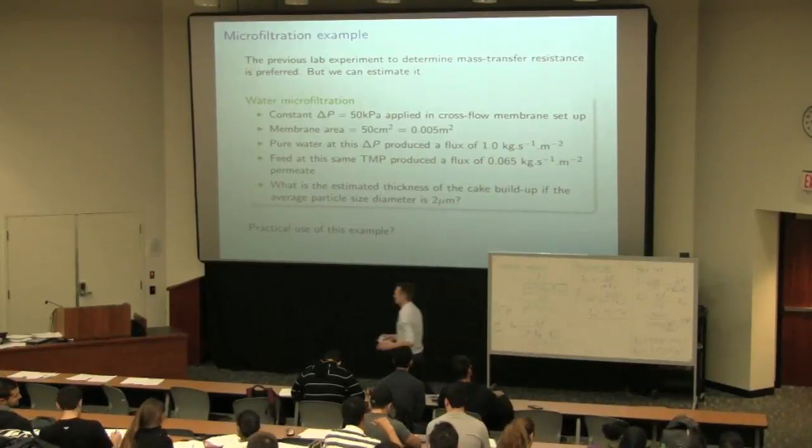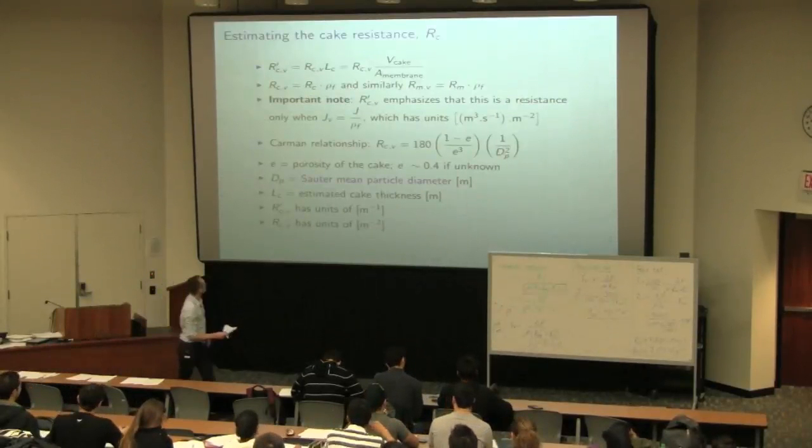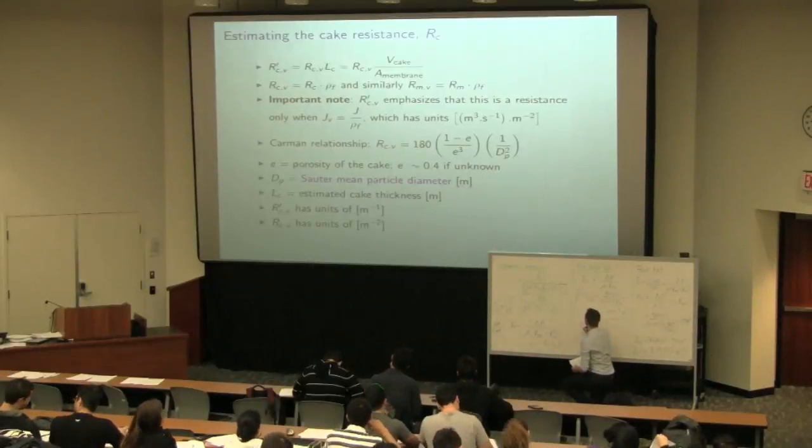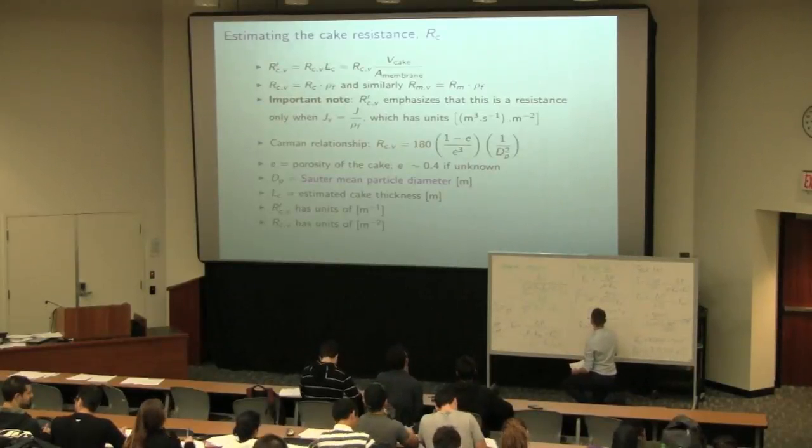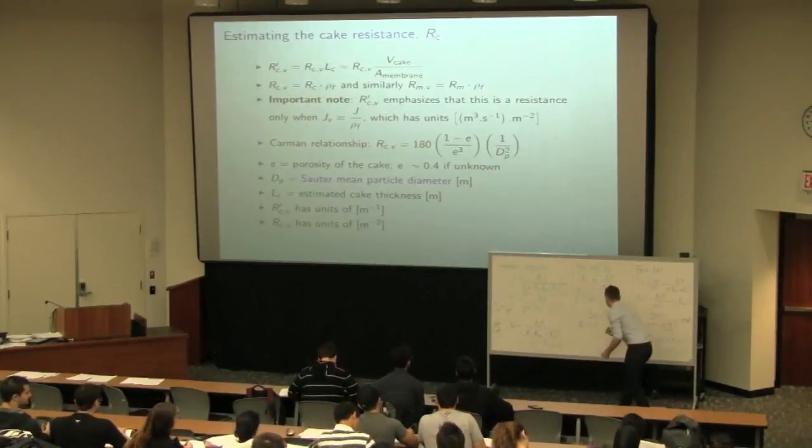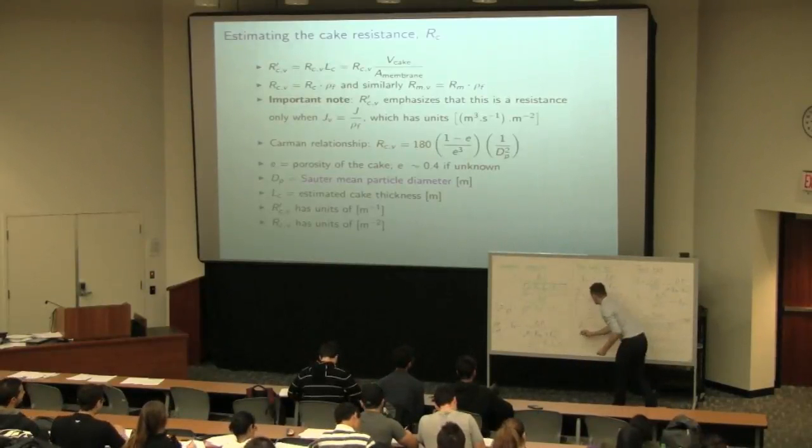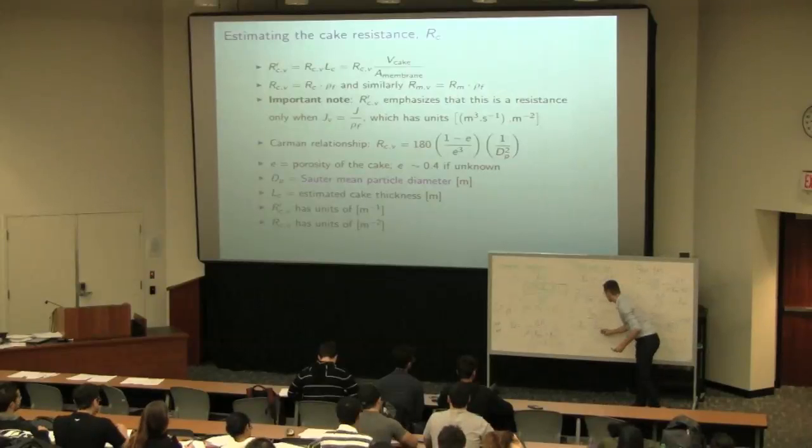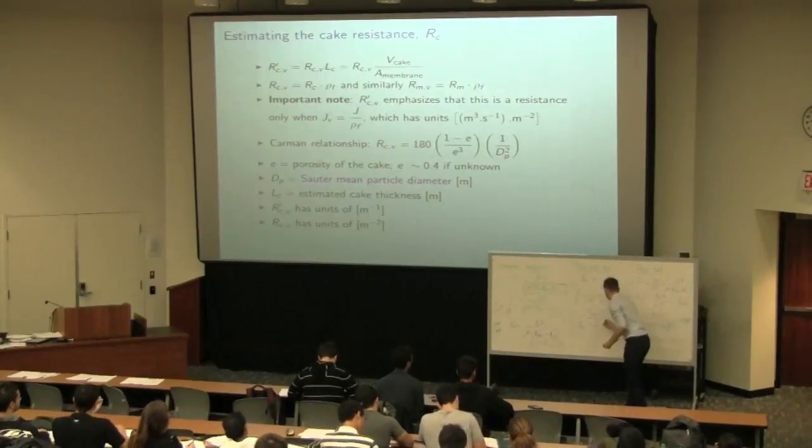And then, just to come back up to this equation over here, we can finish off by saying RCV dash, the very first line, RCV dash is equal to RCV times LC times rho. We now know the cake's resistance. We can get an estimate of RCV using the Carman relationship there. And then, from that, calculate LC, which is what we're after.